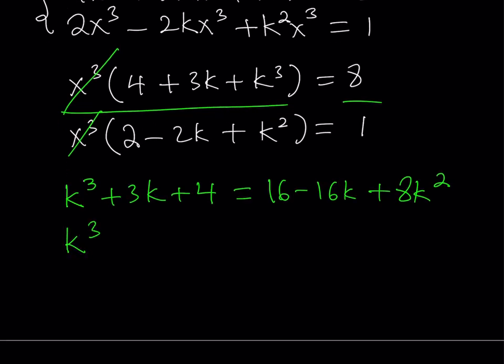Write it as a cubic: k³ minus 8k². And then I'm going to bring the negative 16k over here, so it's going to become positive 19k. And now I have 4 minus 16, which is equal to negative 12. And the whole thing is equal to 0.